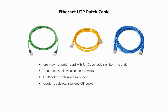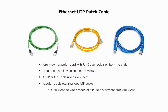A patch cable uses stranded UTP cable. For example, one stranded wire is made of a bundle of tiny and thin wire strands. Stranded cable is not a good conductor, but it is more flexible and stands up to handling without breaking.